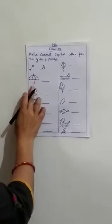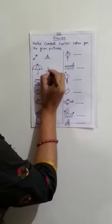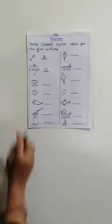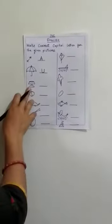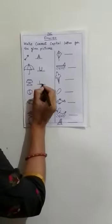This is umbrella. So here we will write capital U. U for umbrella. This is lamp. L for lamp, so capital L.